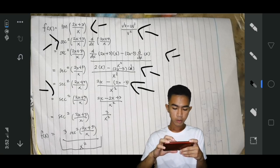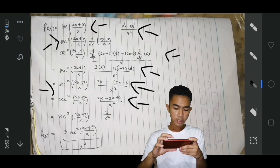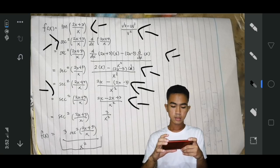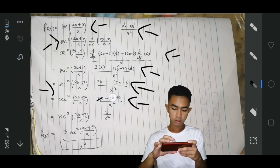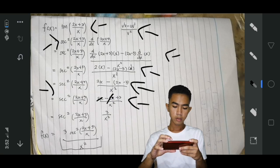After, we can simplify. Secant squared of 2x plus 3 over x. 2x minus 2x plus 3. We can cancel 2x, and the 3 over x squared will remain.